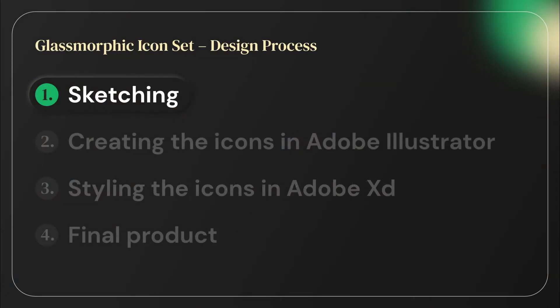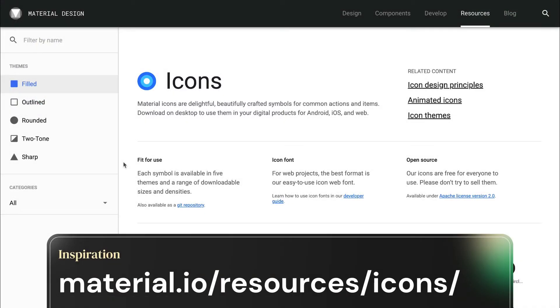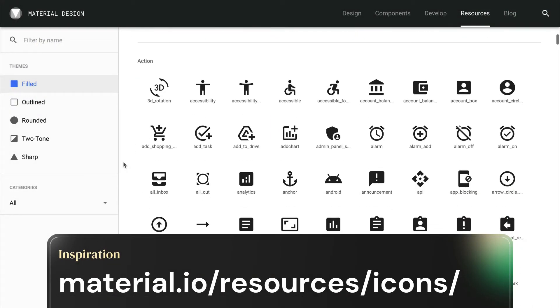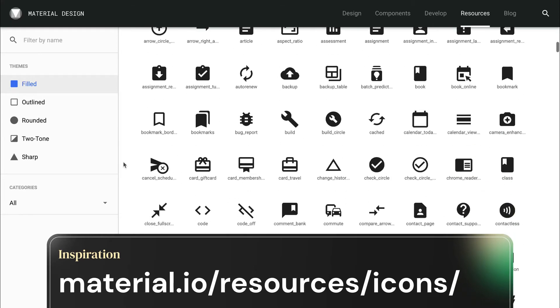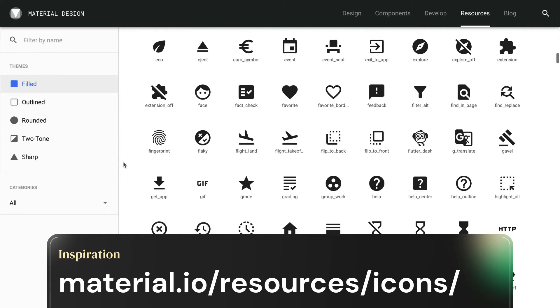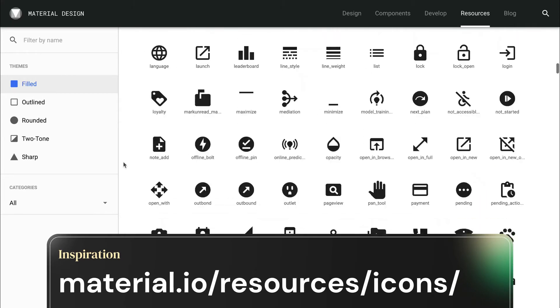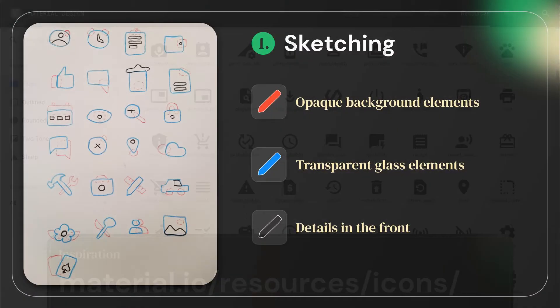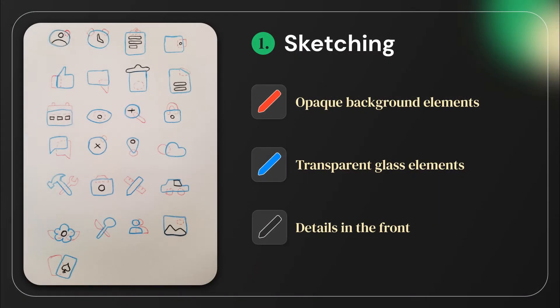First, I opened the icons page of the Material Design guidelines and scrolled through the page to get some inspiration about which icons to create. I will post the link to this page in the description below. I took three color pencils to sketch the ideas for the icons. I used a red color pencil to sketch the opaque background elements, the blue color pencil to sketch the transparent glass elements, and the black color pencil to sketch the icon details in the front.